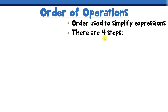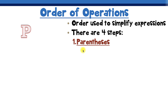For step number one we go to the letter P. P stands for parentheses, and all that means is any numbers or operations you see inside parentheses will happen before anything else.